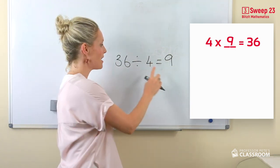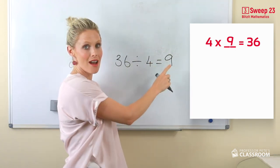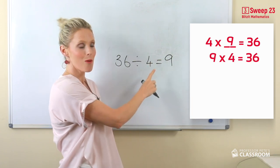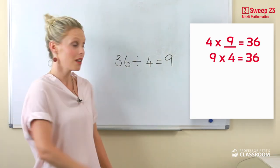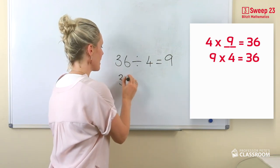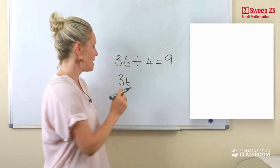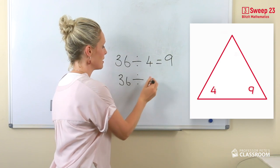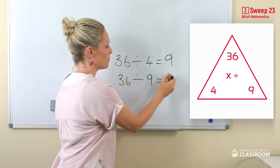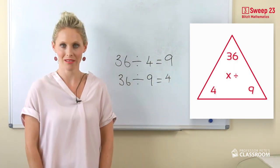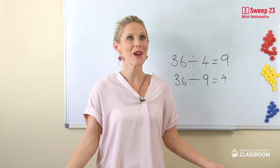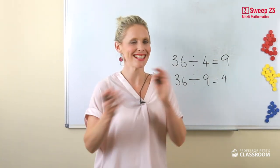We know that four multiplied by nine and nine multiplied by four equals thirty-six. And also in the fact family is thirty-six divided by nine equals four. It's incredible how math is connected.